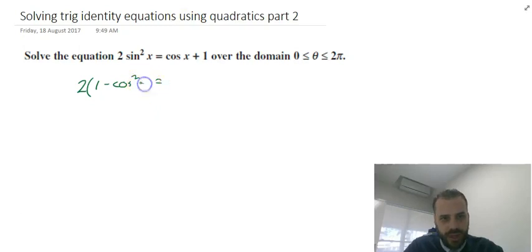Cos²x equals cos x + 1. So I've just replaced that with 1 - cos²x.